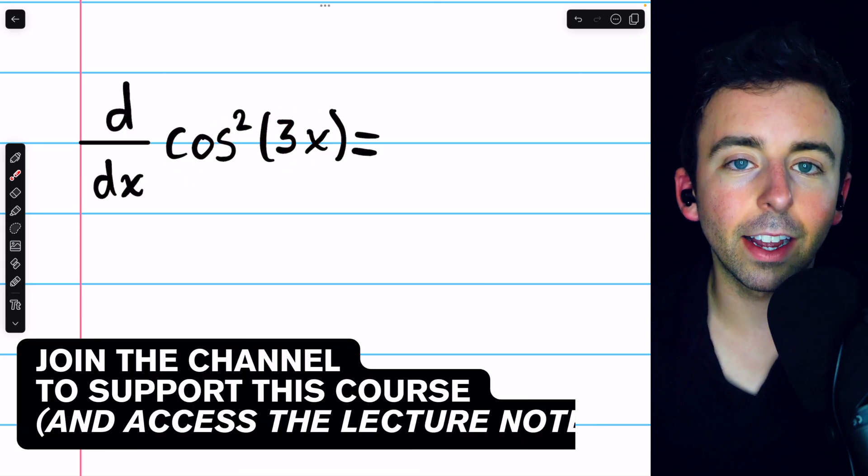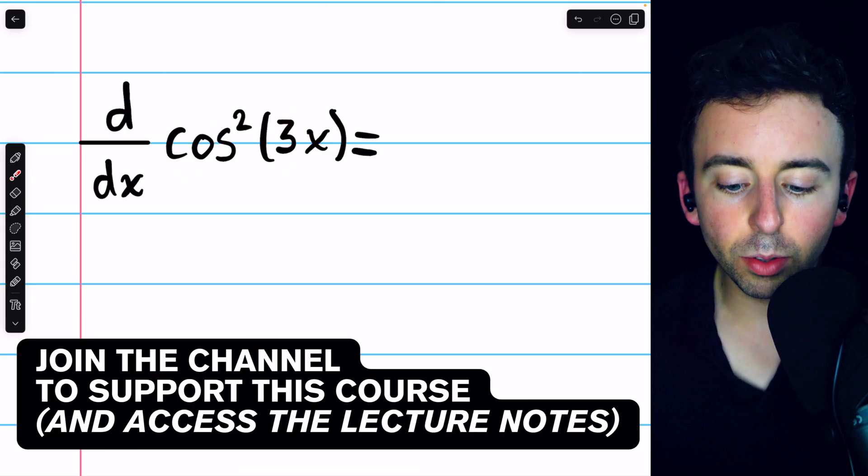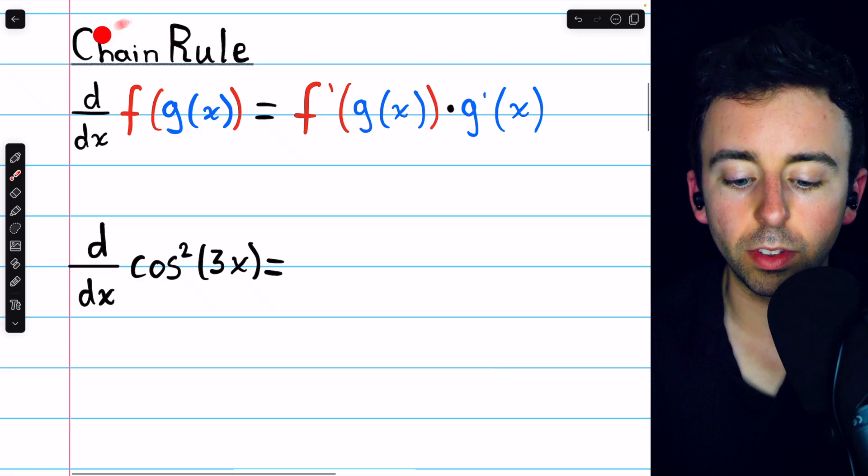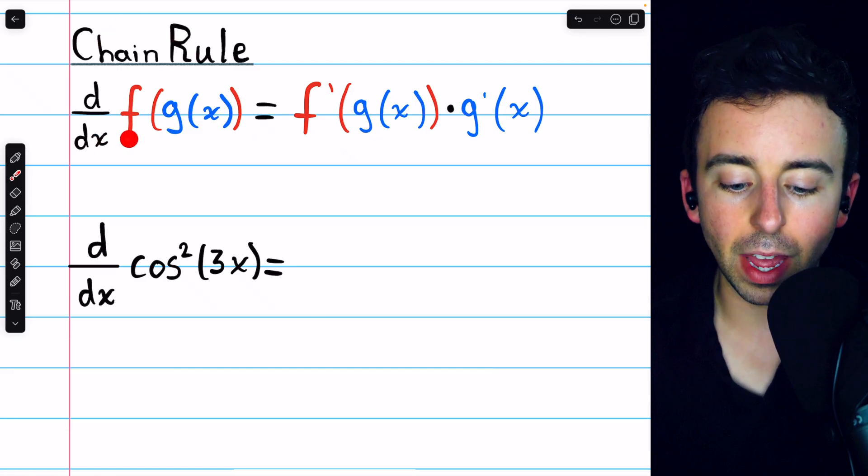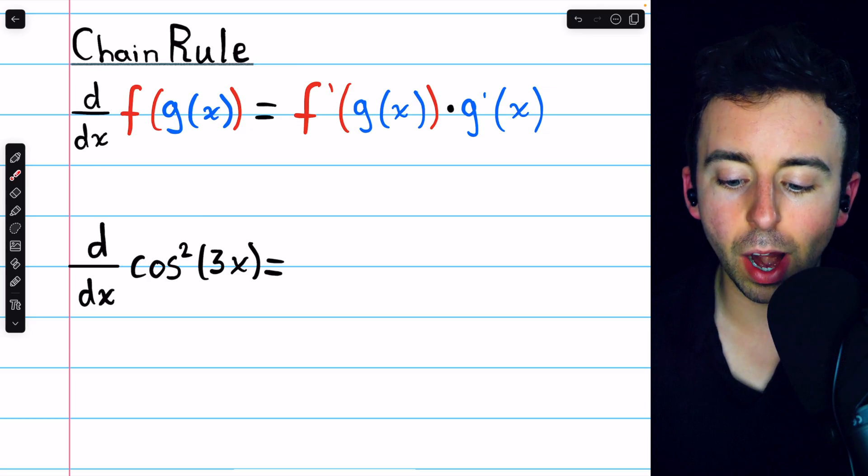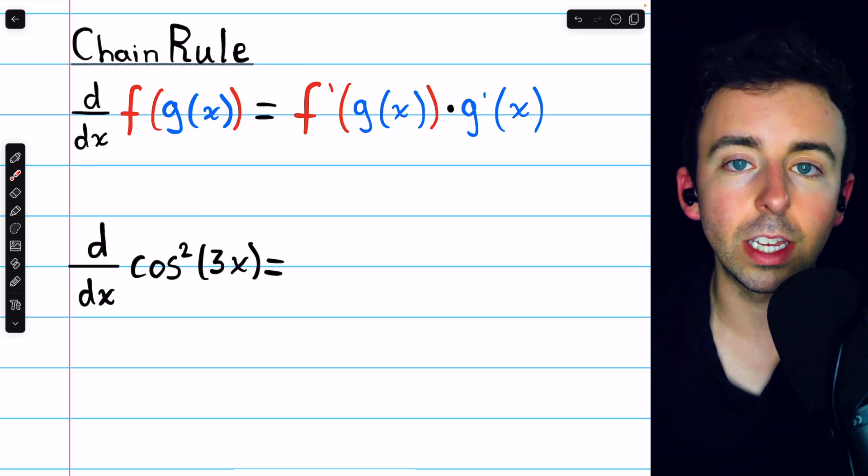Cosine squared of 3x is a composite function, so to take its derivative we need to use the chain rule, which I've written here for your reference. The derivative of f of g is f prime of g times g prime.